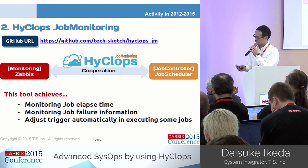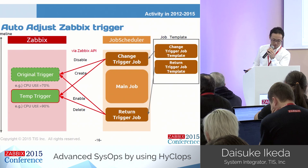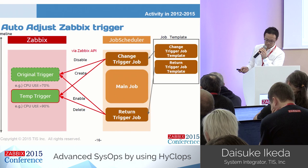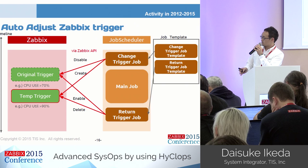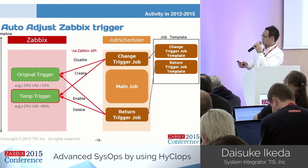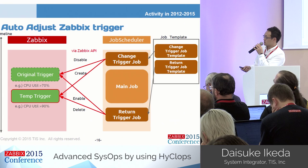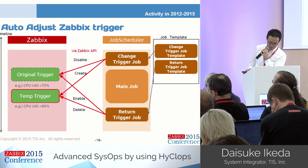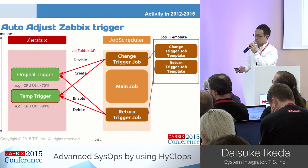There are two types of high load status in services. One is caused by an increase in user access; another is caused by the execution of internal batch processes. Especially the latter can be resolved by cooperation between job management and monitoring. This is the architecture of auto-adjusting Zabbix triggers. Before the main job, a pre-trigger job is set. This job disables the original trigger and creates a new threshold trigger. In this way, by controlling job operations well, system operation becomes more effective.